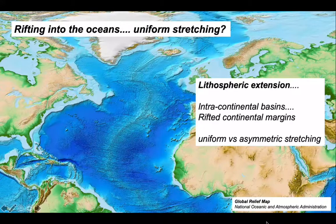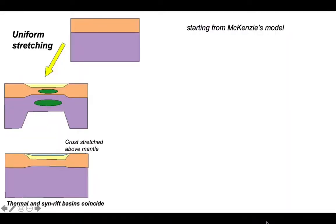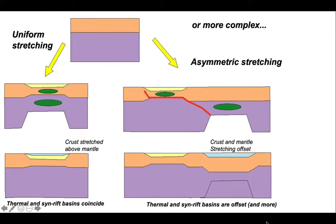We can explore this by considering the difference between uniform and asymmetric stretching. Let's remind ourselves about the uniform stretching model. Here it is: continents stretch apart so that the crust and the underlying lithospheric mantle stretch by the same amount.